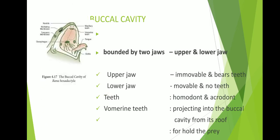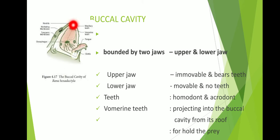The mouth is terminal and wide, and it leads to a wide buccal cavity. Inside the mouth, you can see a cavity known as the buccal cavity. Many structures are seen in this buccal cavity. First of all, the buccal cavity is bounded by two jaws — the upper jaw and the lower jaw.